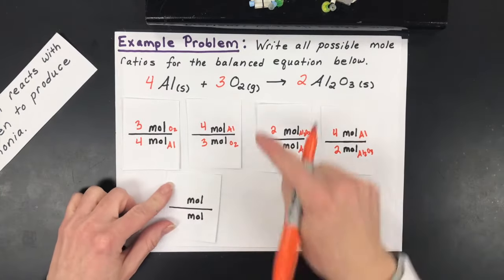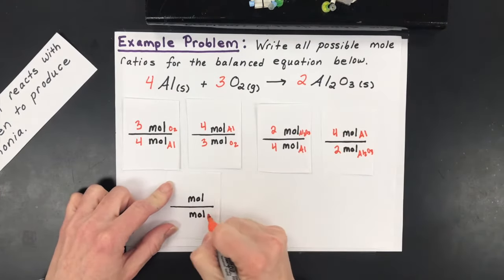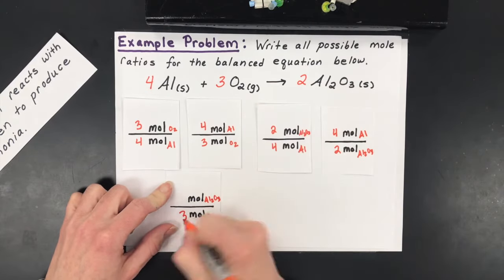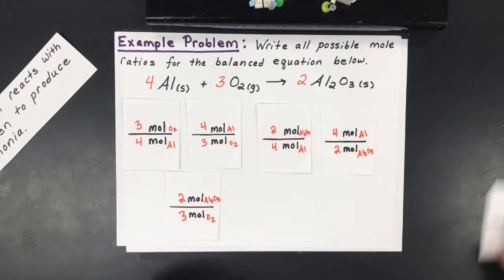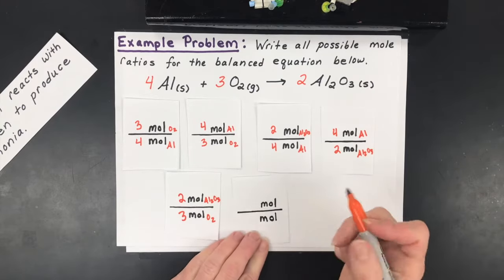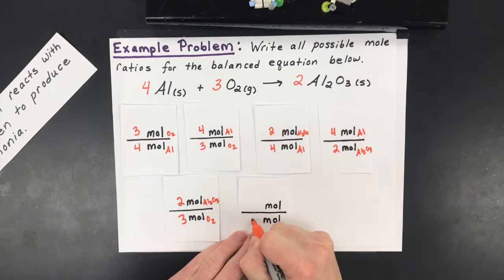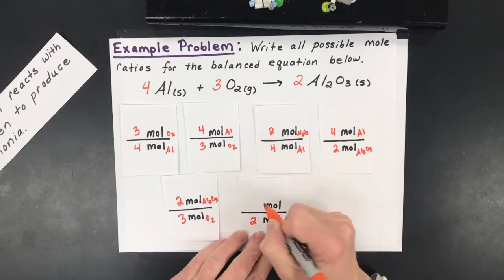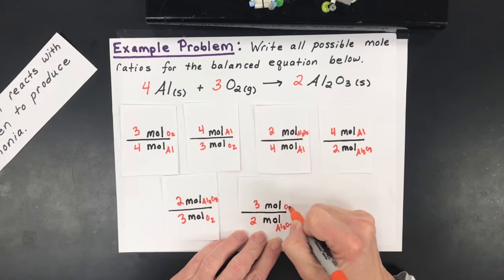And then last but not least we'll compare oxygen to aluminum oxide: three moles of oxygen produced two moles of aluminum oxide. And the reciprocal of that is that you have two moles of aluminum oxide for every three moles of oxygen.